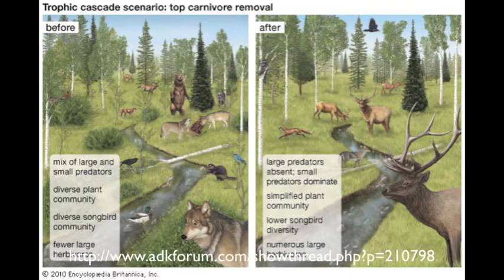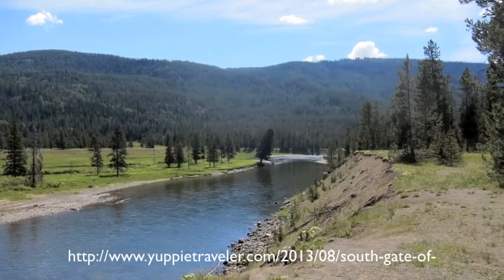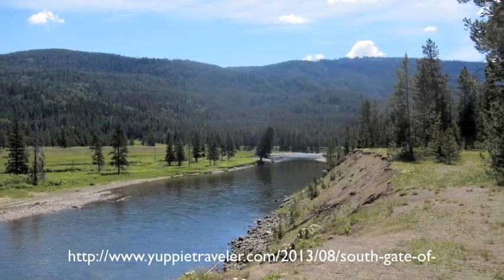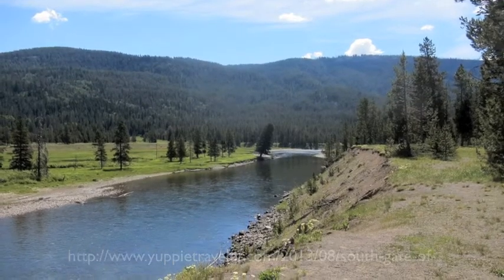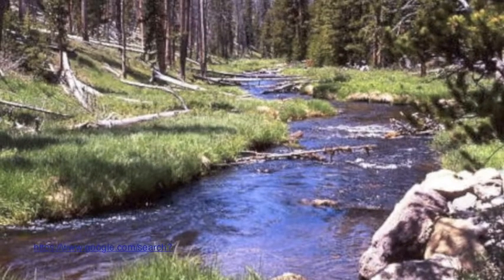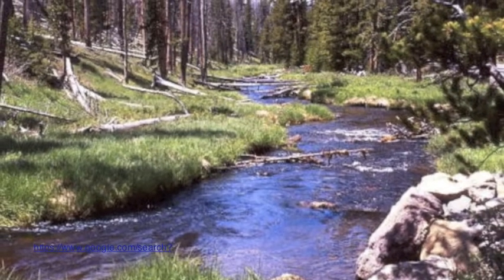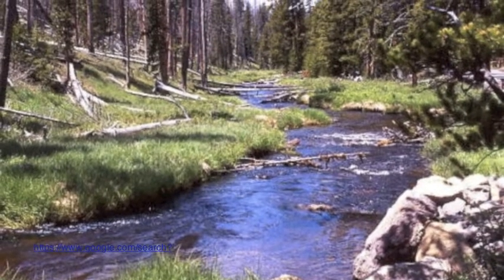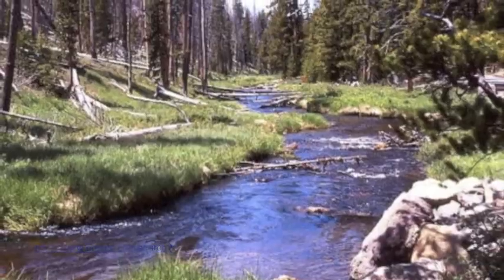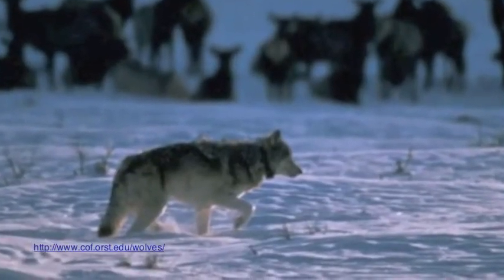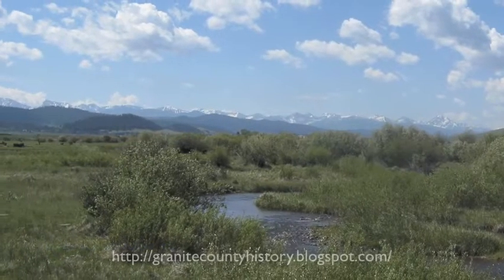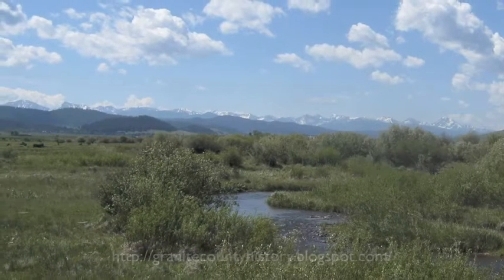Now that we know what the problem is — no apex predator, less diversity in the long run — let's focus on one particular ecosystem within Yellowstone National Park: streams and rivers. Why would the loss of wolves turn a perfectly good forest stream into a grassland stream?